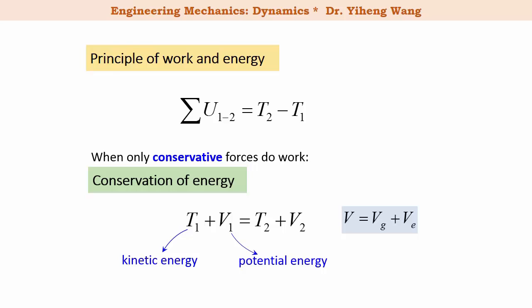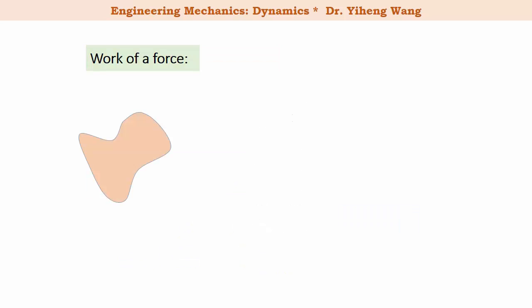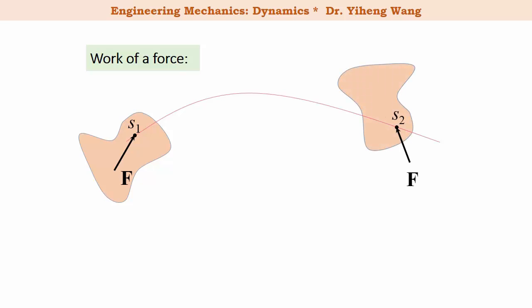Now we need to revisit some key concepts defined for rigid body kinetics. If the rigid body is subjected to a force, and during motion the point of application follows a path, then the total work done by this force is defined as the integration of the dot product of the force vector and the differential position vector.